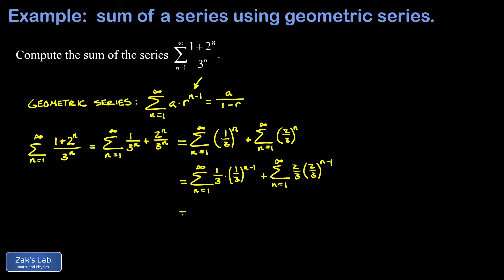We can write down the sum of each of these pieces. In the first one the a is one third and the r is one third, so I have one third over 1 minus one third. In the second one the a is two thirds and the r is two thirds, so I have two thirds over 1 minus two thirds.